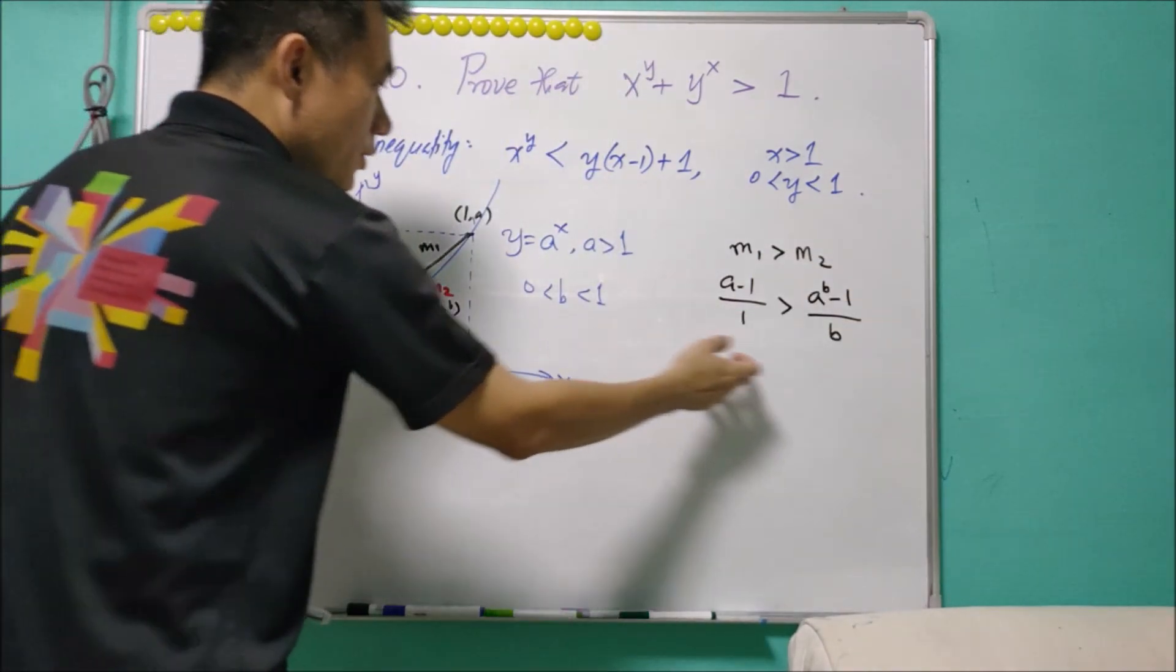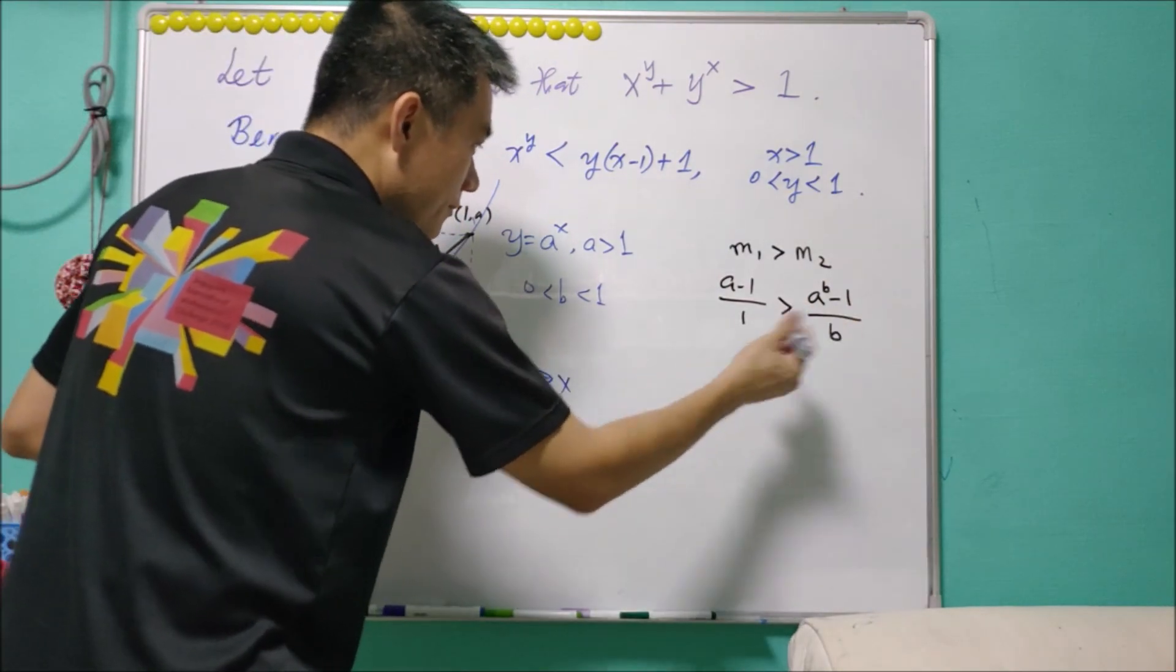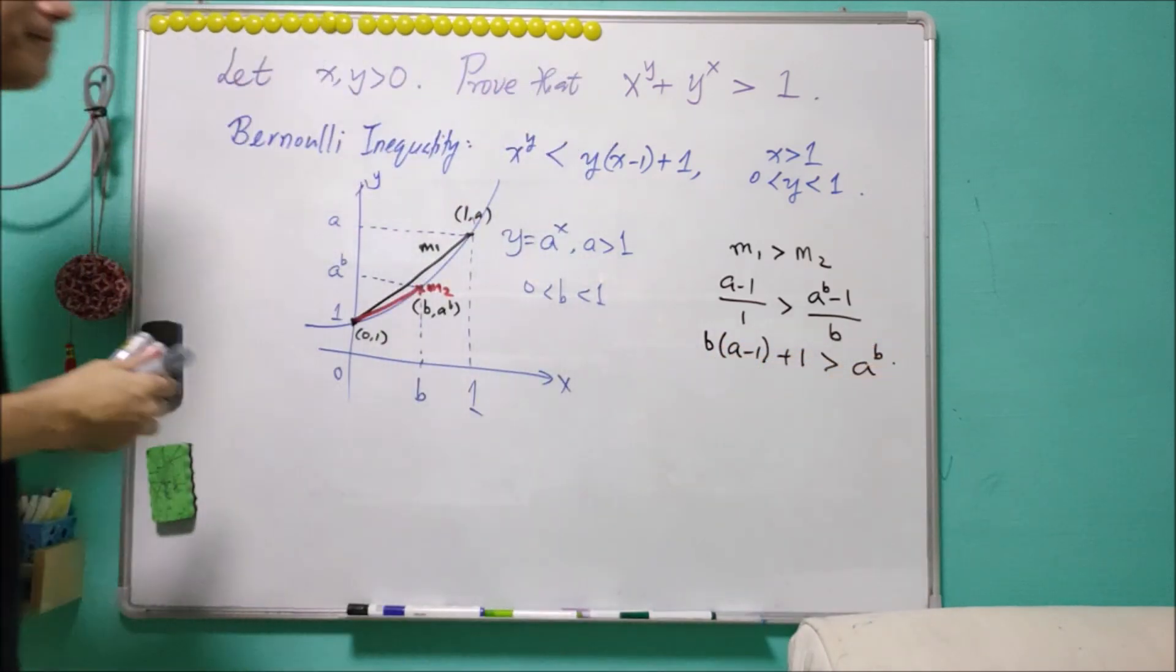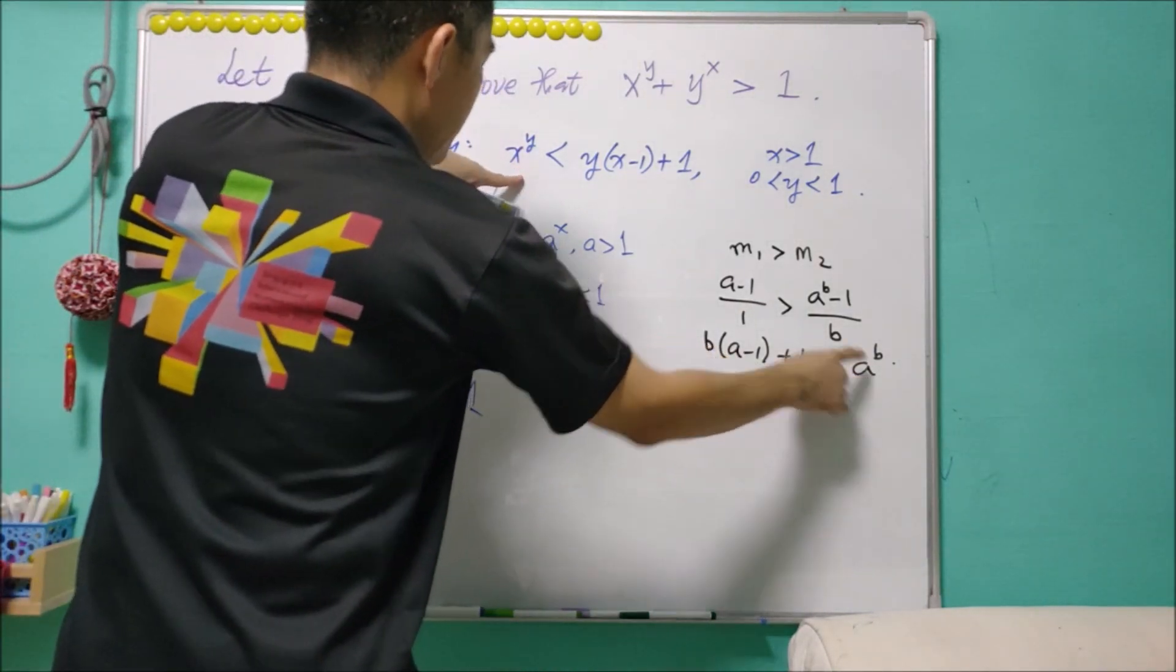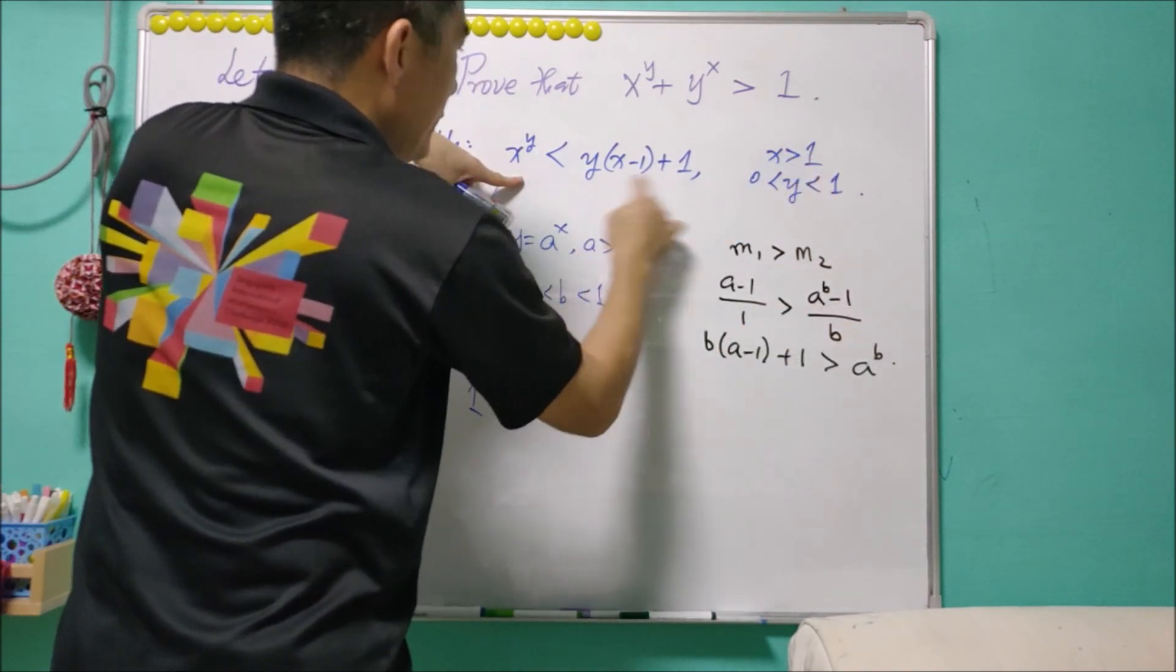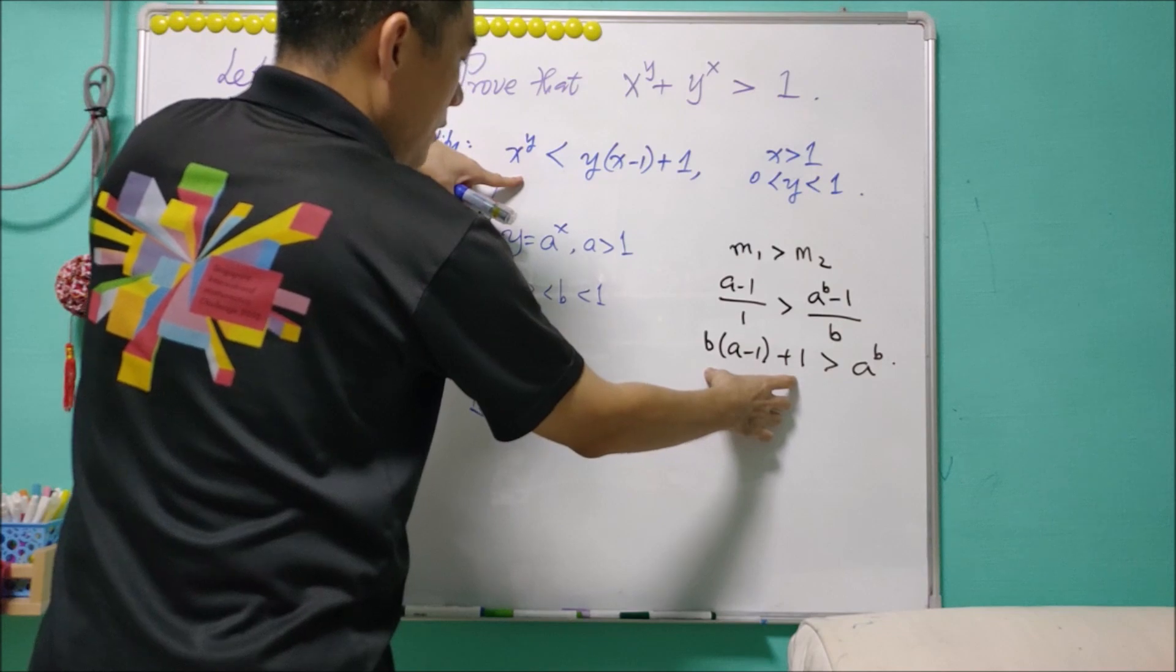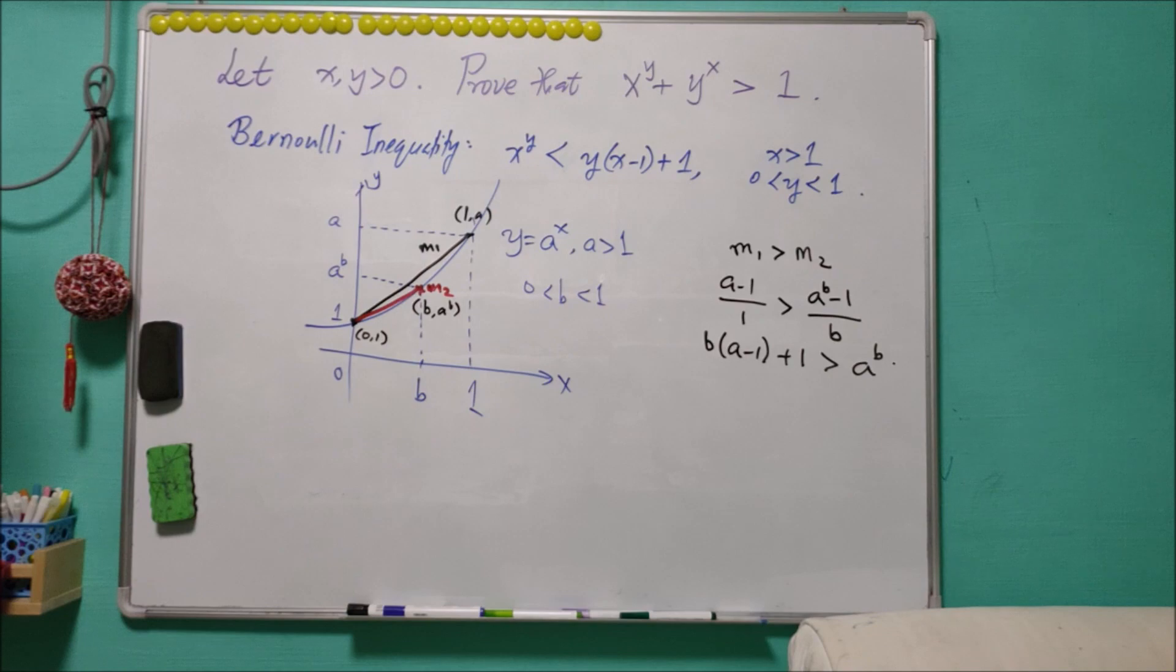Since b is positive, we can multiply both sides with b and after that plus 1. So it will be b times (a minus 1) plus 1 greater than a to power b. So with this, we just proved that if a is greater than 1 or x greater than 1, b or y is in between 0 and 1, then a to power b will be less than b times (a minus 1) plus 1. And this is the part of the Bernoulli inequality.